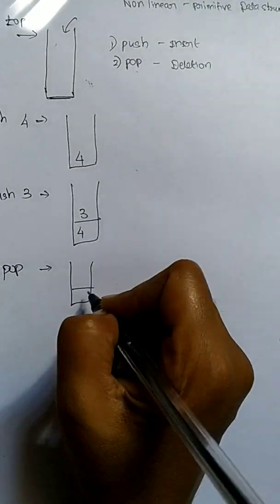Since the stack has only one end, both push and pop operations happen only at one end, so the element which is pushed last will be popped first. You can also call the stack as last in, first out (LIFO), or first in, last out (FILO).